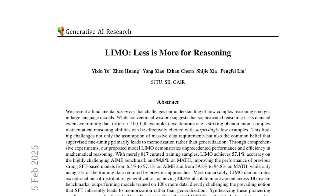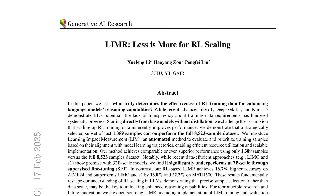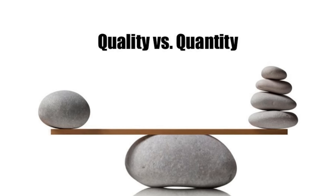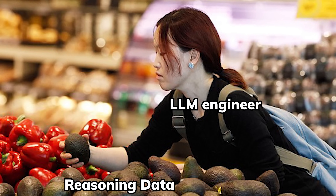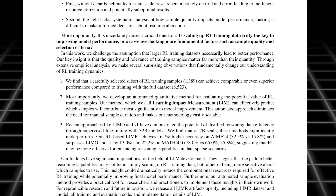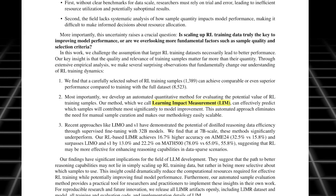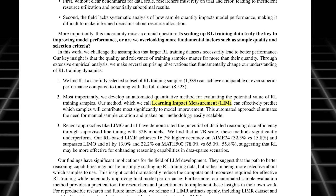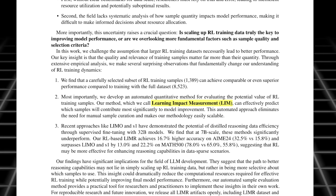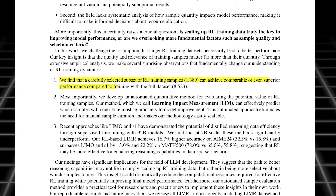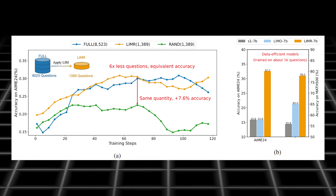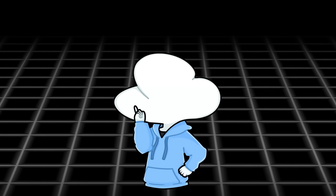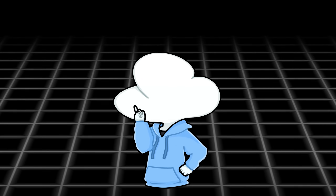Alongside "Less is More for Reasoning," there's also the concept of less is more for reinforcement learning scaling. This research further builds on quality over quantity. When making or choosing high-quality reasoning data at scale, it's hard to know what's best for the model. So they introduced learning impact measurement — a systematic way to quantify good samples by looking at which samples contribute more significantly to a model's improvement. With this, they effectively reduced the data needed by around 84% and still obtained the same performance, eliminating the need for manual sample curation and saving compute power.